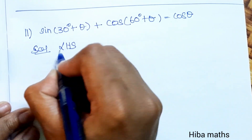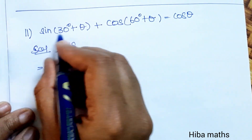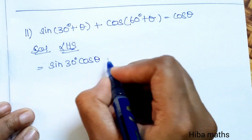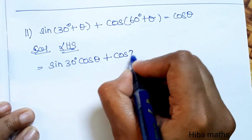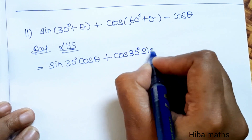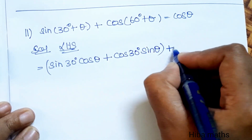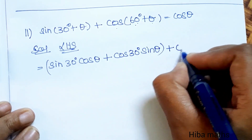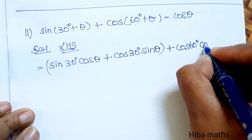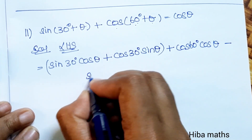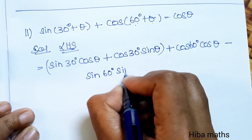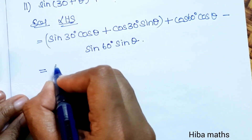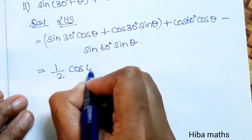Applying the formulas: sin(A+B) = sin A·cos B plus cos A·sin B, placed in the first bracket. Then cos(A+B) = cos A·cos B minus sin A·sin B, placed in the second bracket. Next we substitute the standard values.